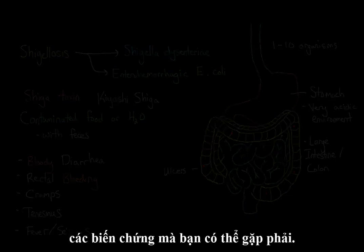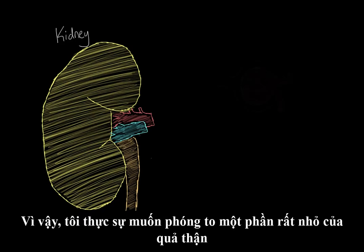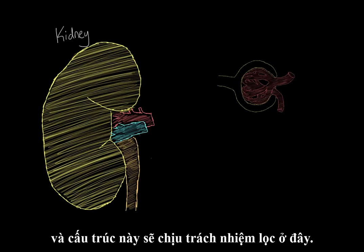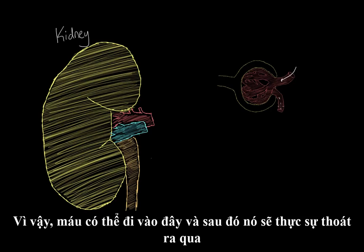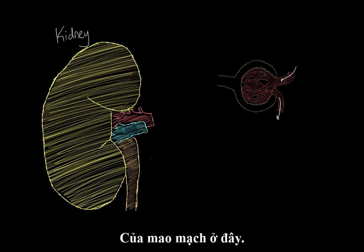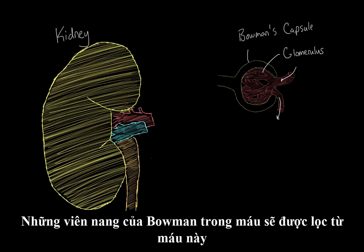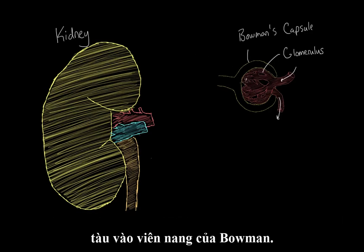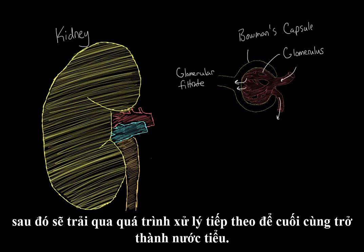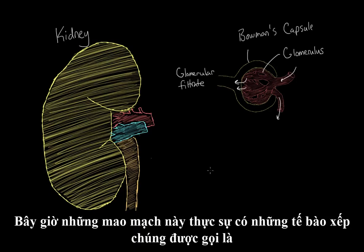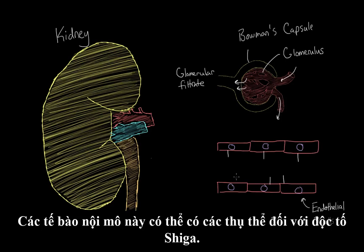There are also a number of other possible complications that you may experience. These complications usually arise in your kidney. Zooming in on a small portion of the kidney responsible for filtration: blood vessels enter and exit, and there is a bundle of capillaries known as the glomerulus. The glomerulus is encompassed by a structure known as the Bowman's capsule. Stuff in the blood will be filtered from these blood vessels into the Bowman's capsule, forming what's called the glomerular filtrate. These capillaries have cells lining them called endothelial cells, which may have receptors for the Shiga toxin.